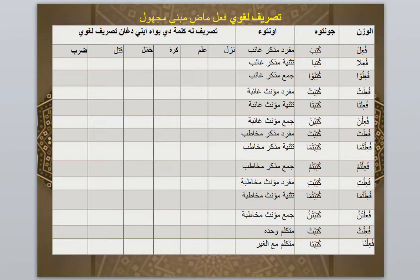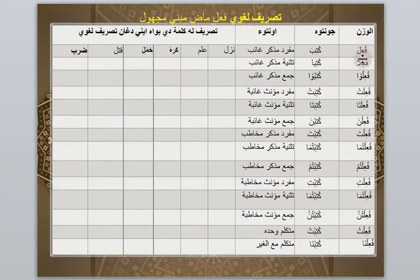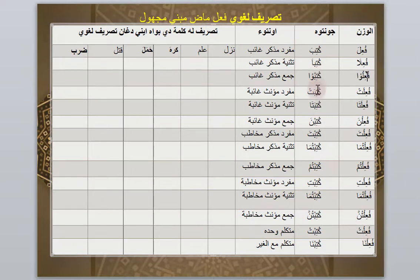Misalnya Fu'ila dari wazan Fa'ala, menjadi: Fu'ila, Fu'ila, Fu'ilu, Fu'ilat, Fu'ilata, Fu'ilna, Fu'ilta, Fu'iltuma, Fu'iltum, Fu'ilti, Fu'iltuma, Fu'iltuna, Fu'iltu, Fu'ilna. Contoh lain: Kutiba, Kutiba, Kutibu, Kutibat, Kutibata, Kutibna, Kutibta, Kutibtuma, Kutibtum, Kutibti, Kutibtuma, Kutibtuna, Kutibtu, Kutibna.